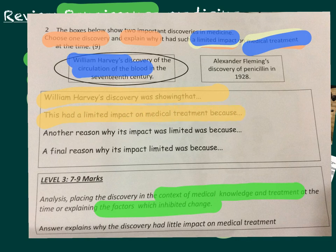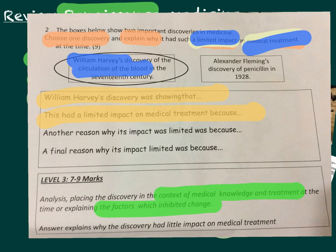Then give your first paragraph: 'This had limited impact on medical treatment because...' State your point, give your evidence, and explain which particular factors stopped change. For example, a lack of technology meant they were unable to discover things about blood groups at the time. They didn't have powerful enough microscopes or good enough technology to look at blood groups. And if you don't know about blood groups, you can't do blood transfusions — and without those, you can't use knowledge of the heart to do heart surgery, because you would lose a lot of blood.